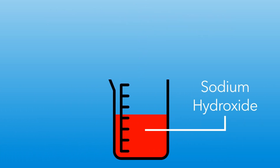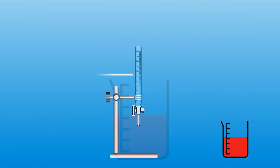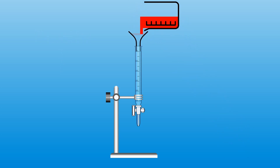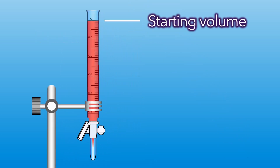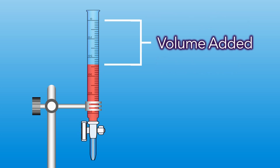We then take our alkali, sodium hydroxide, of known concentration and add it to a burette using a funnel. By taking note of the starting and final volume, we can see exactly how much alkali was added to neutralise our sample.